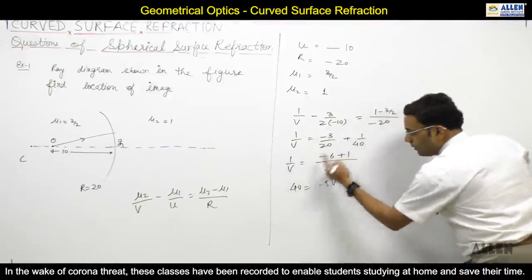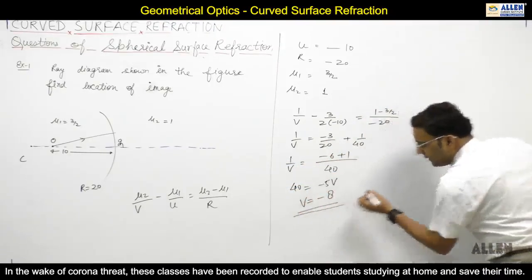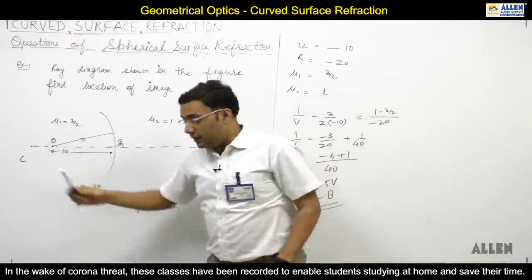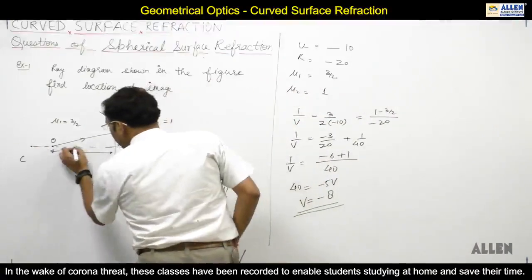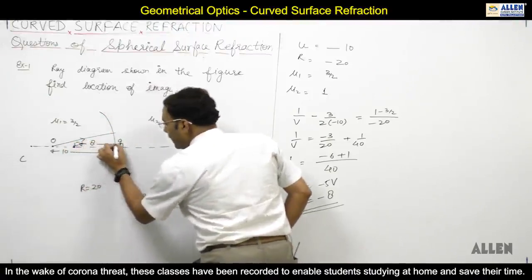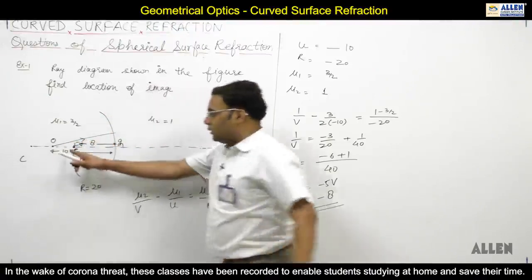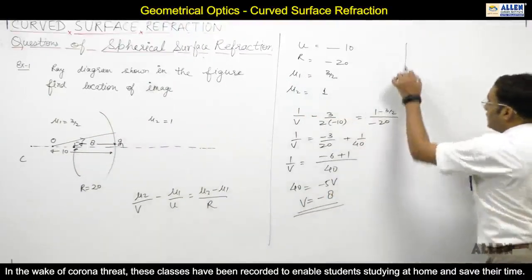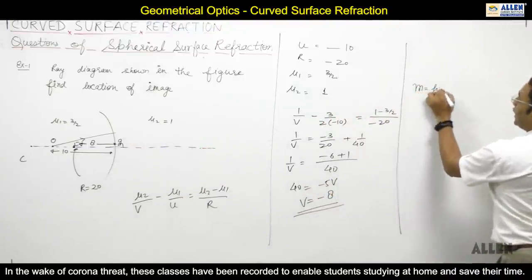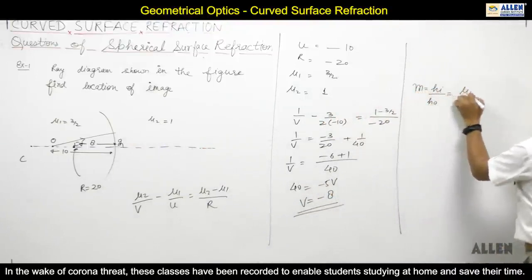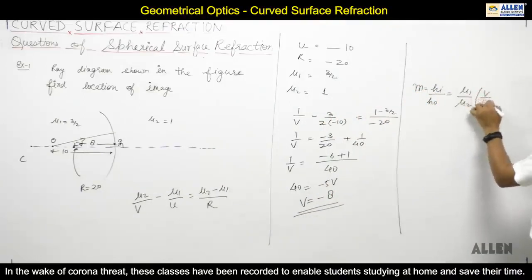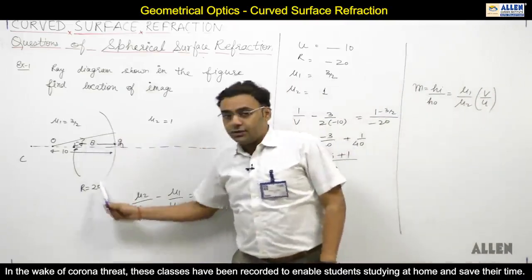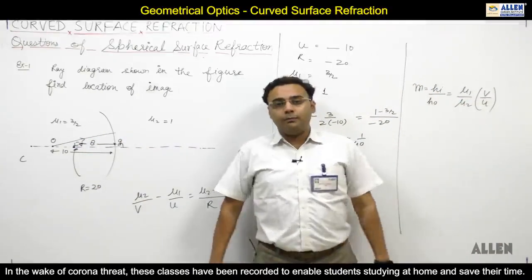Solving: 40 = -5V, so V = -8. Since V is negative, the image forms on the same side as the object. The location of the image is at a distance of 8 from the surface. If magnification is required, the formula for curved surface refraction is: m = (μ1/μ2) × (V/U).